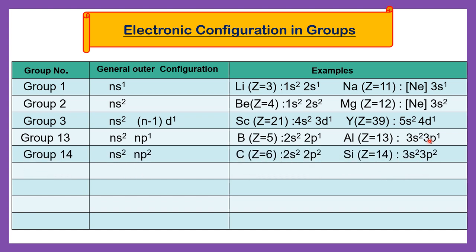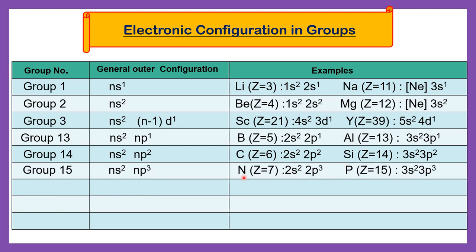Group number 14 has general outer electronic configuration ns2 np2. Example: carbon (atomic number 6) has outer electronic configuration 2s2 2p2 — s subshell having 2 electrons, p subshell having 2 electrons. Silicon also has s subshell with 2 electrons and p subshell with 2 electrons. Group number 15 has general outer electronic configuration ns2 np3 — p subshell having 3 electrons. Example: nitrogen has 2s2 2p3.